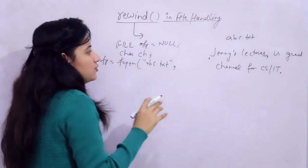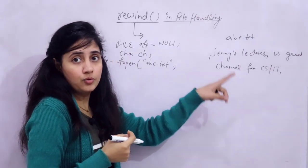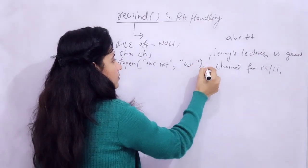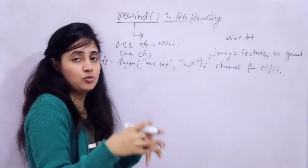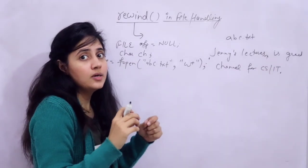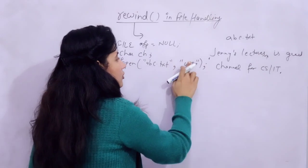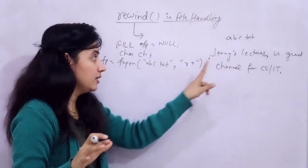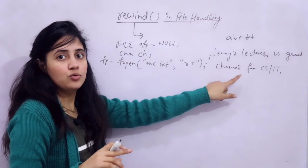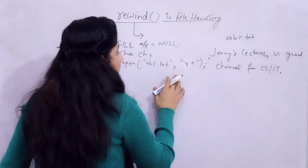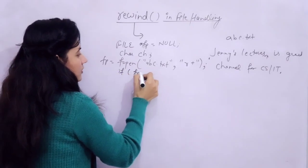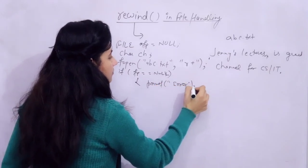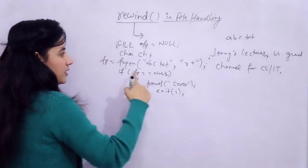Suppose I am opening a file in both write and read mode — for example, w+ mode or r+ mode. In r+ mode the existing content is preserved and you can both read and write. In w+ mode, the existing content gets erased. You should check if fp equals null, and if so, print an error and exit. Otherwise proceed with reading or writing.